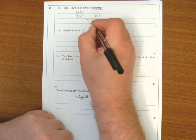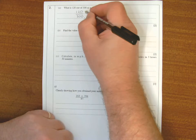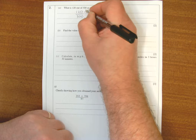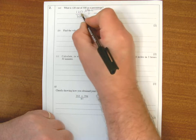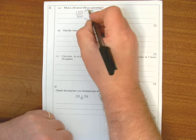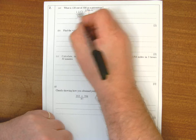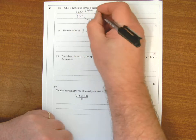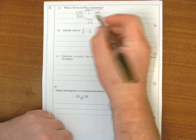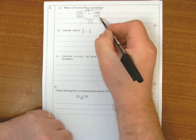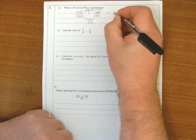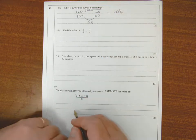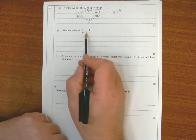I've divided by 3, and then I have to do exactly the same to the top, so I need to divide 120 by 3. 12 shared by 3 is 4, so 120 shared by 3 is 40. So 120 out of 300 is the same as 40 out of 100, which means the answer is 40 percent.